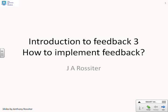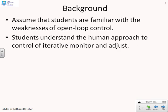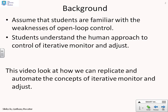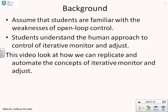This is the third video on Introduction to Feedback. This video focuses on how we might implement feedback loops in practice. We're going to assume that students are familiar with the weaknesses of open loop control that was covered in video one, and also that students understand how humans ensure that systems behave the way we want by using an iterative procedure of monitor and adjust. This video is going to look at how we replicate the human procedures using some form of automation to replace the human in the loop.